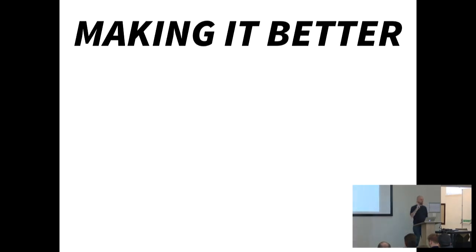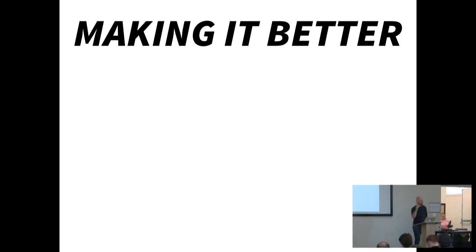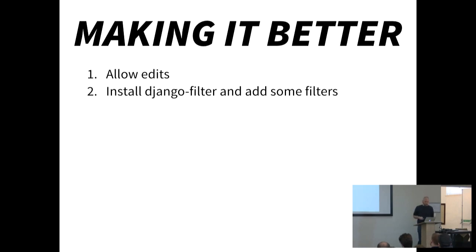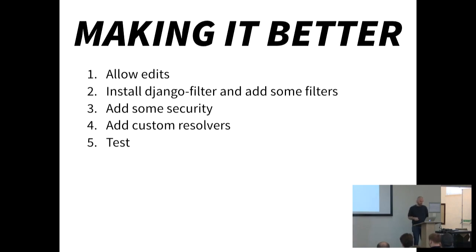However, there are ways to make it better, and this is where the maximum value will come — this stuff was really hard to find over the last year as we put GraphQL into production. In the next two weeks we'll open source a project with a whole bunch of these implemented. Here are the five things we're going to do to make it better: allow edits, install Django filter for the filtering you saw in the complex example, add security, add some custom resolvers, and write tests.